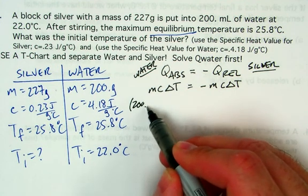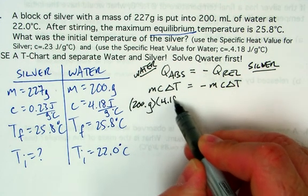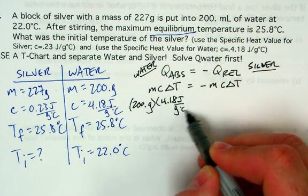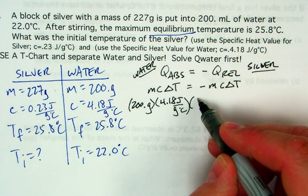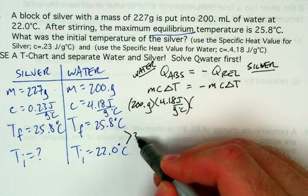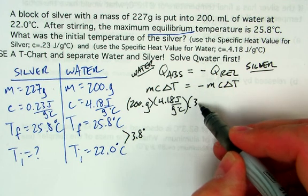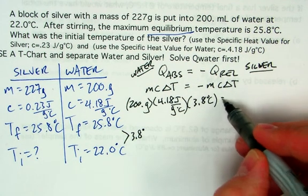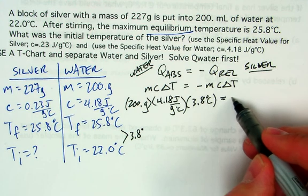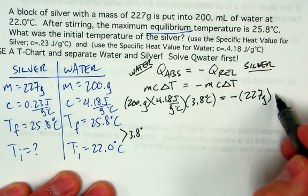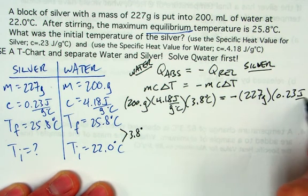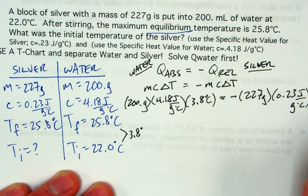Now I'll start filling in the information. For water: 200 grams, specific heat 4.18 joules per gram degree Celsius, and the change in temperature — final minus initial — is 3.8 degrees. On the other side, the mass of silver is 227 grams, specific heat is 0.23 joules per gram degree Celsius, and the temperature term is 25.8 minus T-initial, where T-initial is our unknown.